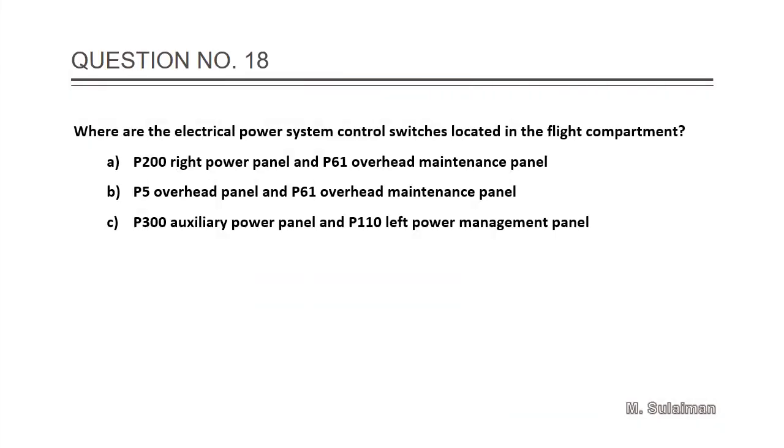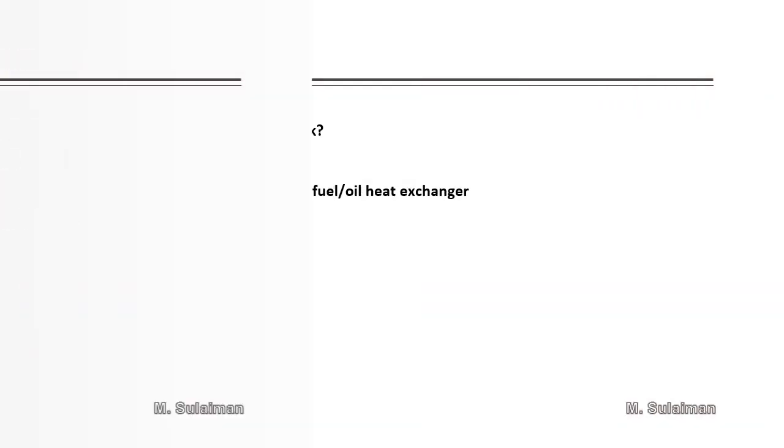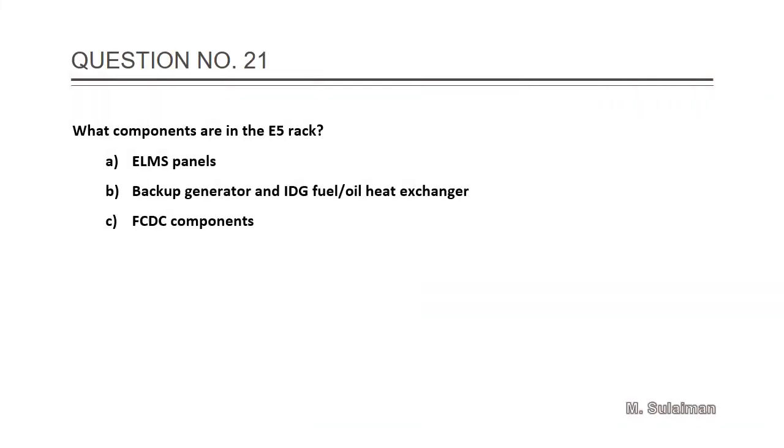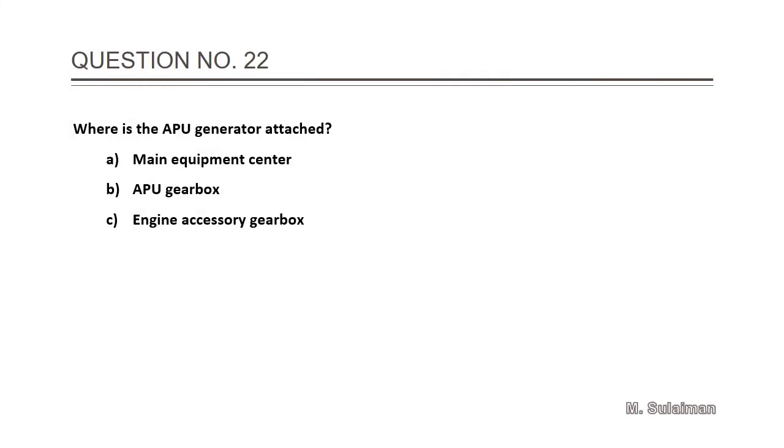Answer is A: the towing power system. Number 18: Where are the electrical power system control switches located in the flight compartment? Answer is B: P5 overhead panel and P61 overhead maintenance panel. Number 20: Where is the rate generator located?